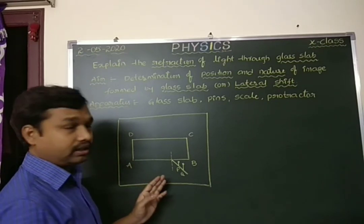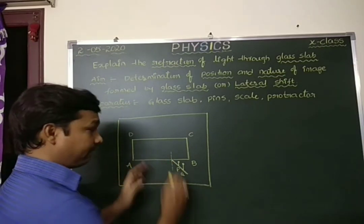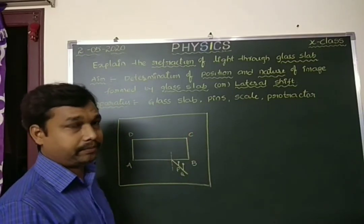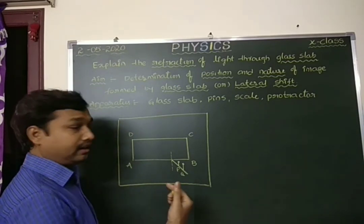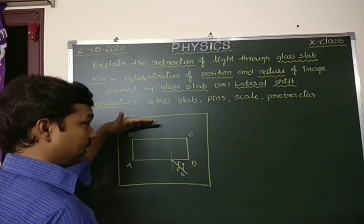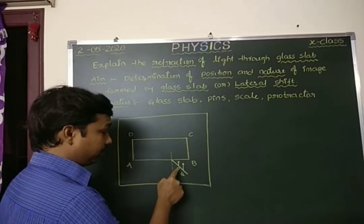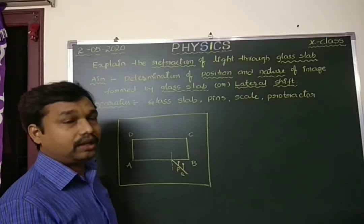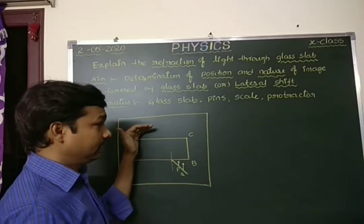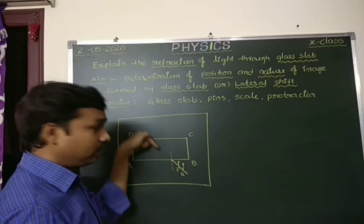The light ray is coming in this direction. After drawing this, we need to replace the glass slab again in its original position A, B, C, D carefully. Then we go to the second side of the glass slab — the DC side — and observe from there.